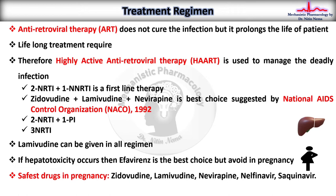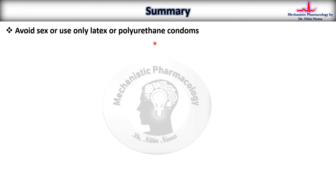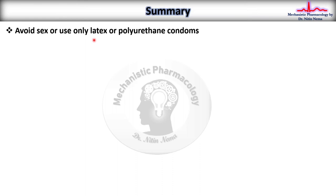In summary, HIV infection is very dangerous. If left untreated, it takes approximately 10 to 15 years for the immune system to be severely damaged to the point where it can no longer defend itself. Precautions include avoiding unprotected sex or using latex or polyurethane condoms. Ordinary contact such as hugging, kissing, or shaking hands does not spread the infection.